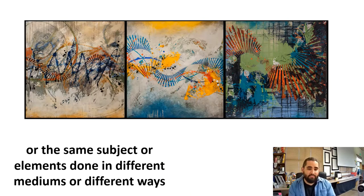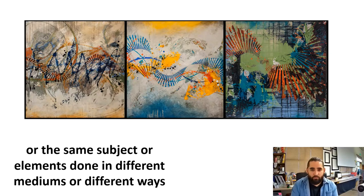Last but not least, connections could also be made by using the same subject or elements done in different mediums or different ways. This particular artist, when you look at their work, although each one is uniquely different in and of itself, they have very similar subjects. Some of them use different color palettes, but the style in which it's created is very similar. You can tell that the same artist made all three of these pieces.